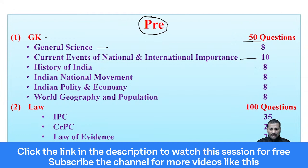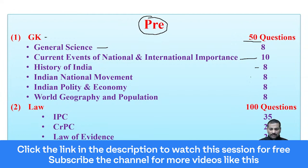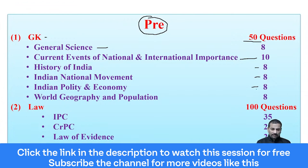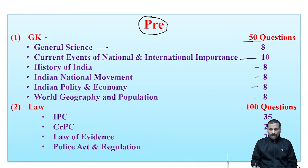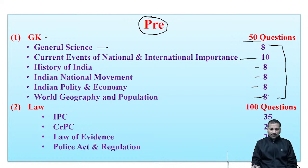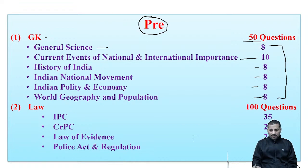History of India - 8 marks, Indian National Movement - 8 marks, Indian Polity and Economy combined - 8 marks, Geography and Population - 8 marks. All of this together makes 50 marks.